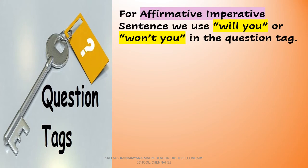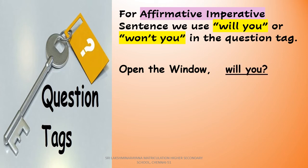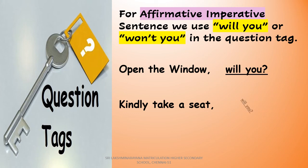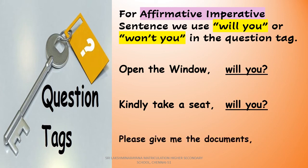Next rule: for an affirmative imperative sentence — that is, a positive imperative sentence — we can use either 'will you' or 'aren't you' as the question tag. Example: 'Open the window.' This is a positive imperative sentence, so we can use 'will you?' or 'aren't you?' The subject hidden in an imperative sentence is always 'you,' so the subject pronoun in the question tag is also 'you.' More examples: 'Kindly take a seat, will you?' and 'Please give me the documents, aren't you?'